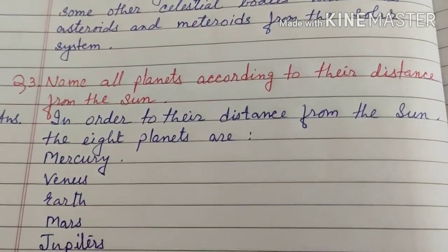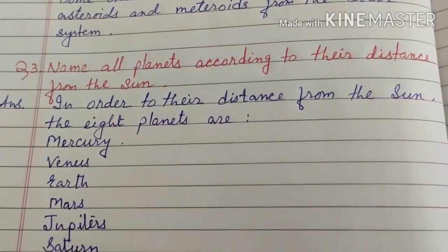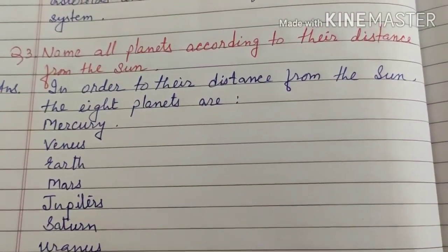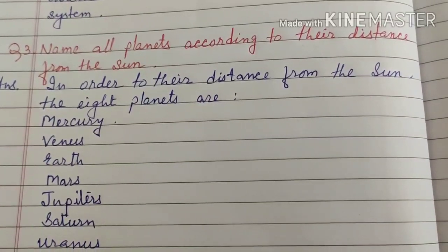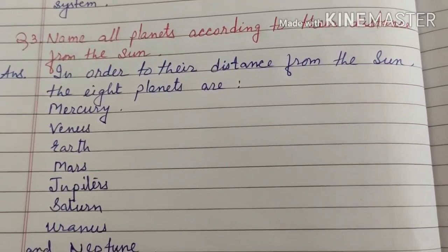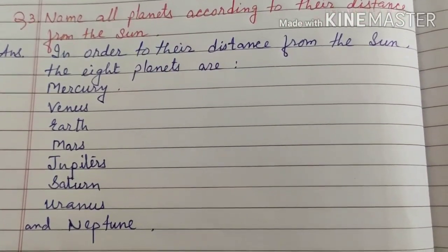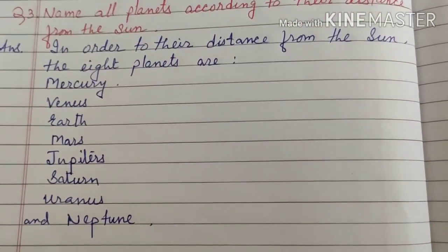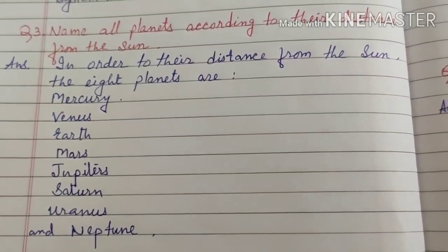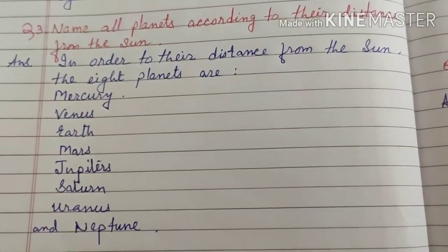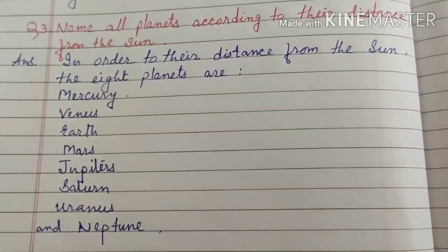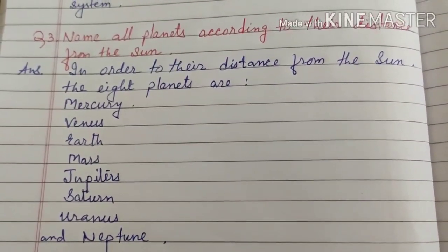Name all planets according to their distance from the Sun. In order, the eight planets are: Mercury, Venus, Earth, Mars, Jupiter, Saturn, Uranus, and Neptune. Students should write this in their copy and also draw a picture of the solar system on the left side.